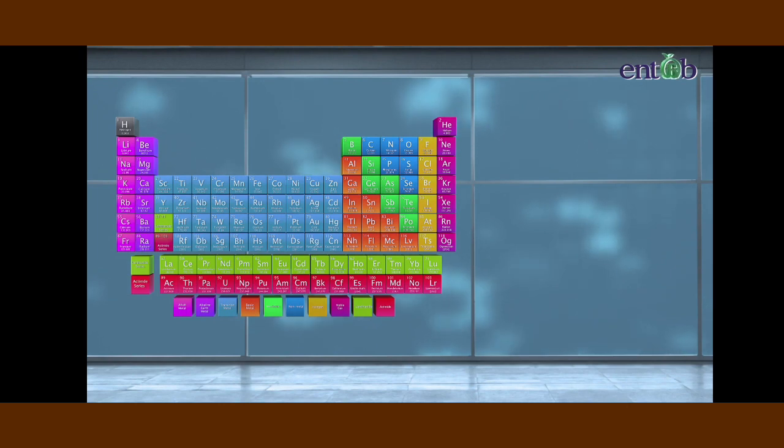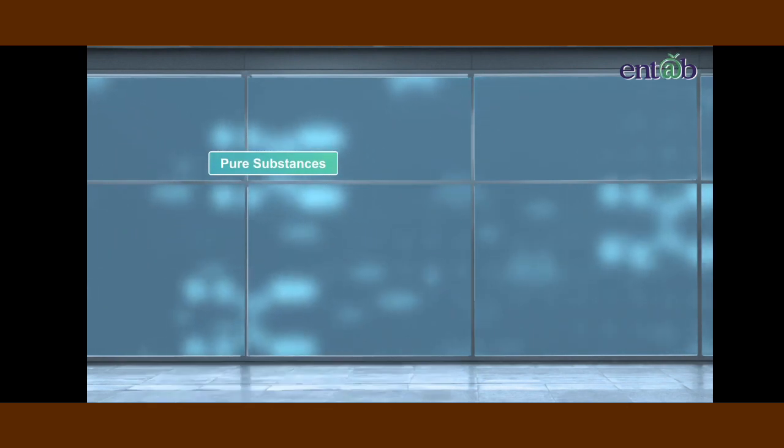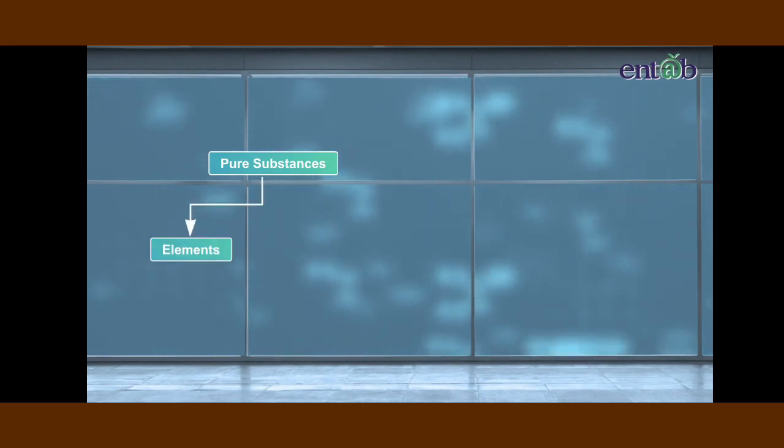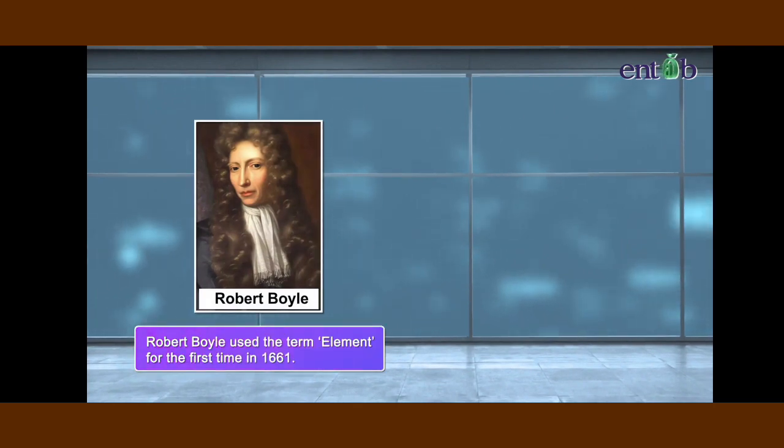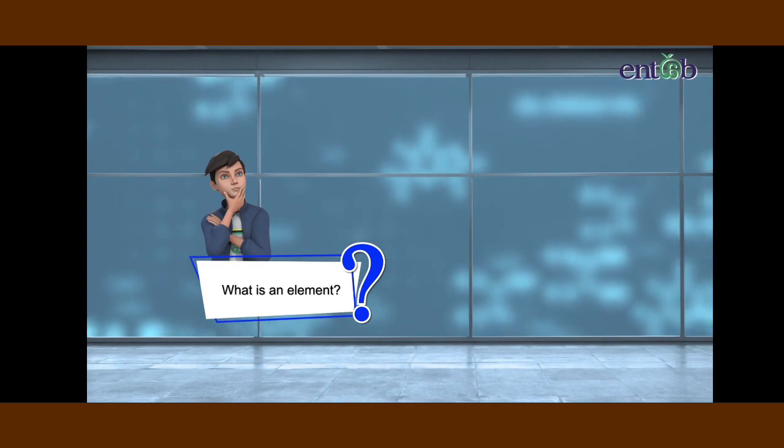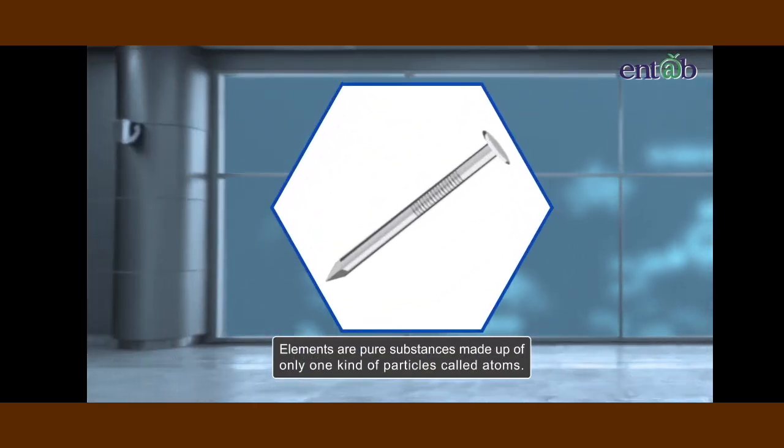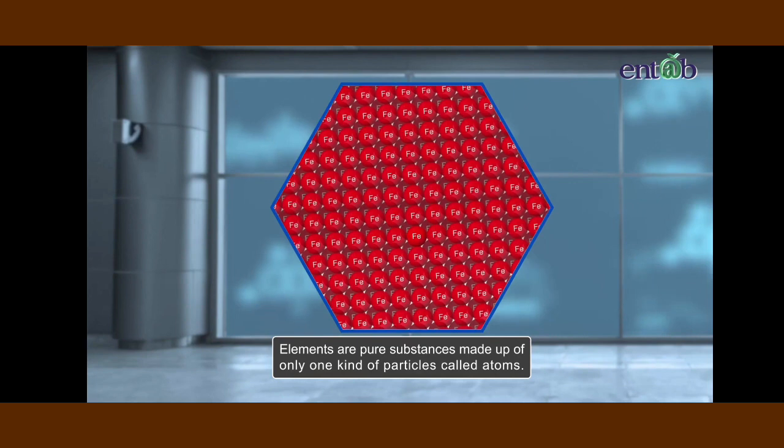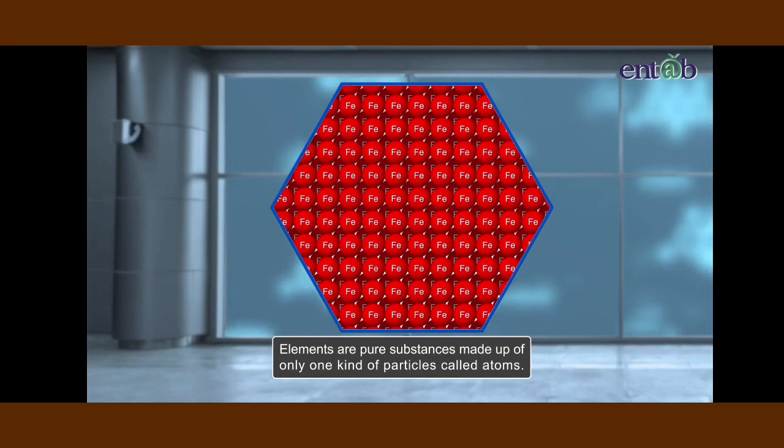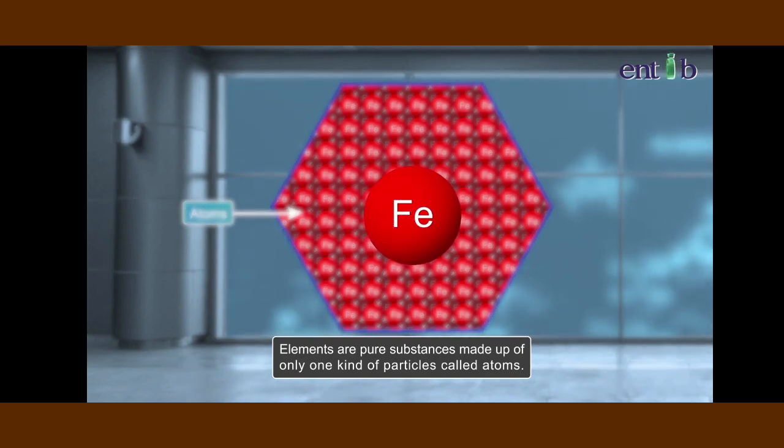We have seen in the last chapter that pure substances can be classified into two groups, namely elements and compounds. Robert Boyle used the term elements for the first time in 1661. So can you recall what is an element? An element is a pure substance made up of only one kind of particle called atoms which cannot be broken down into simpler particles.